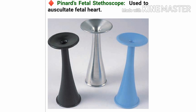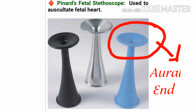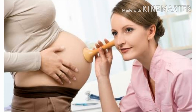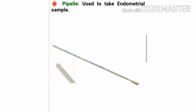Our next instrument is Pinard's fetal stethoscope. It is used to auscultate the fetal heart. As you can see, it is a hollow horn made up of metal, about eight inches long. It has two ends: one called the oral end and the other called the abdominal end. This picture shows the correct way of using the Pinard stethoscope. This is the pipette, used to take an endometrial sample.